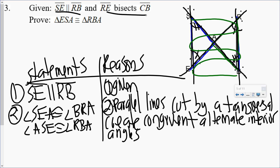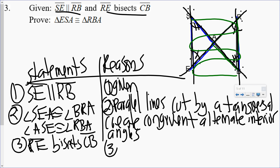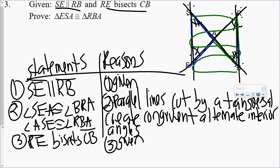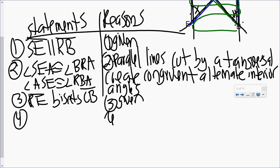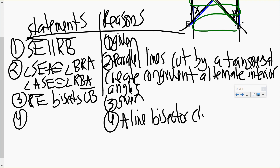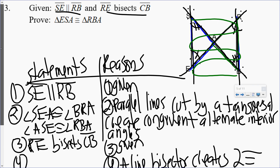Next given. RE bisects SB. Given. Well, that's a line bisector, so I write a line bisector — it creates two congruent segments. Since SB is being bisected, SA and AB are my two congruent segments.